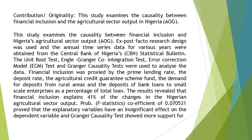Financial Inclusion was proxied by the Prime Lending Rate, the Deposit Rate, the Agricultural Credit Guarantee Scheme Fund, the Demand for Deposits from Rural Areas, and the Deposits of Bank Loans to Small-Scale Enterprises as a Percentage of Total Loan.